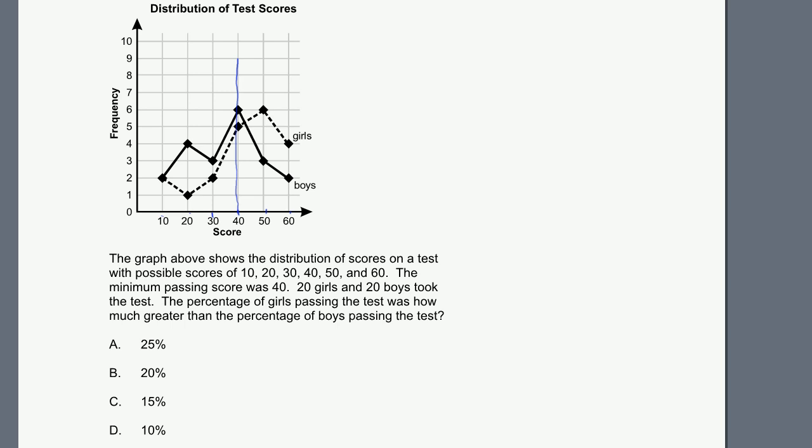So let's see how many girls passed the test. This dotted graph is the girls. So 5 got a 40. So those passed. They just barely passed. Then you had another 6 girls get a 50. And then you had another 4 girls get a 60. Plus 4. So that's how many girls passed. So that's 5 plus 6 is 11, plus 4 is 15 girls passed. There were a total of 20 girls. So 15 out of 20, or you could think of that as 75%.